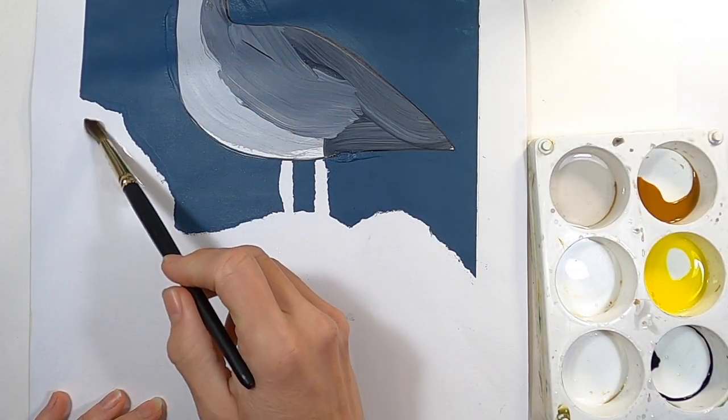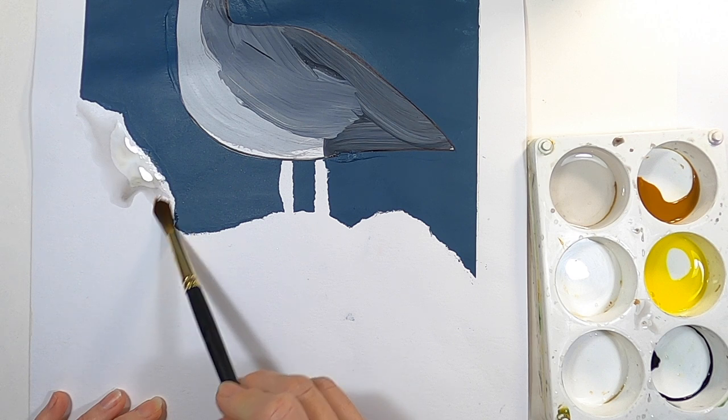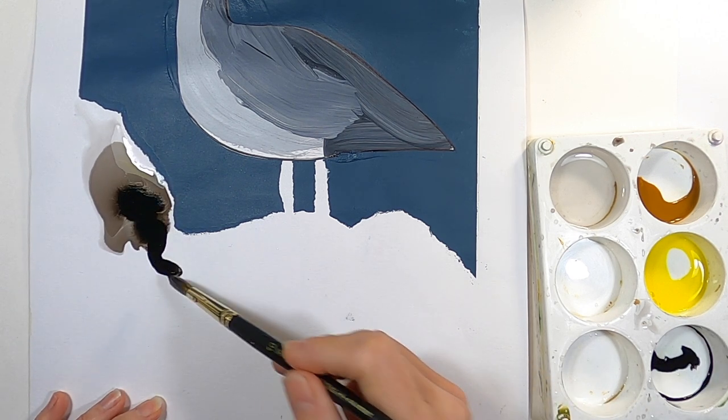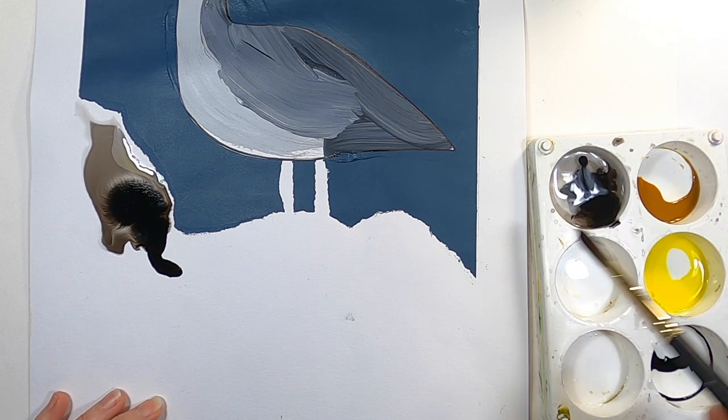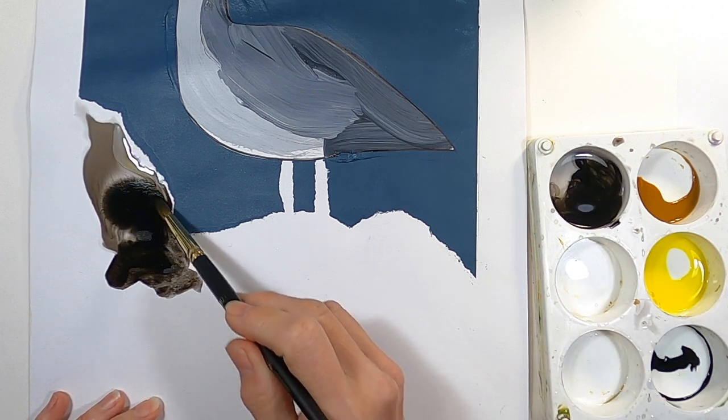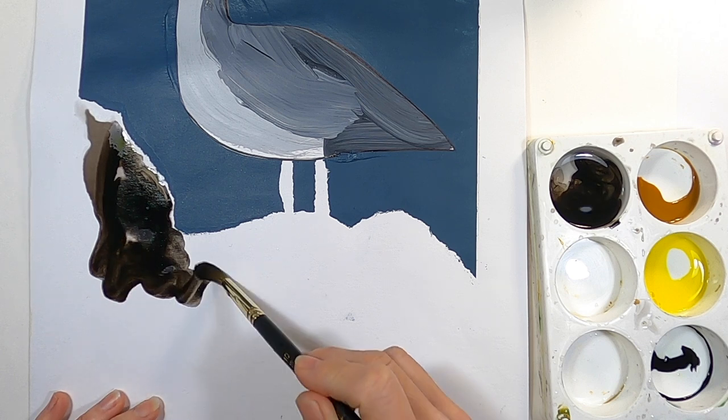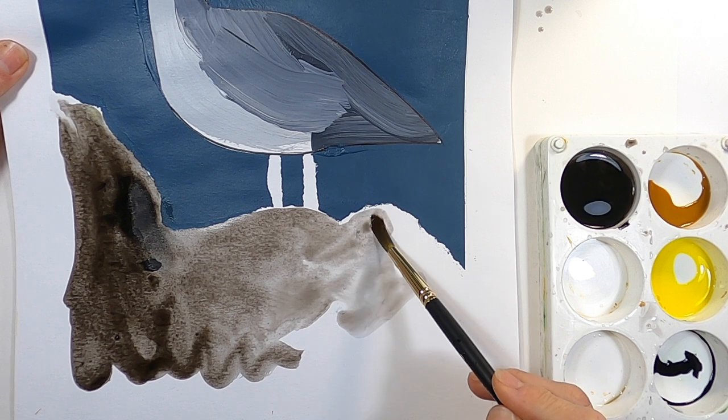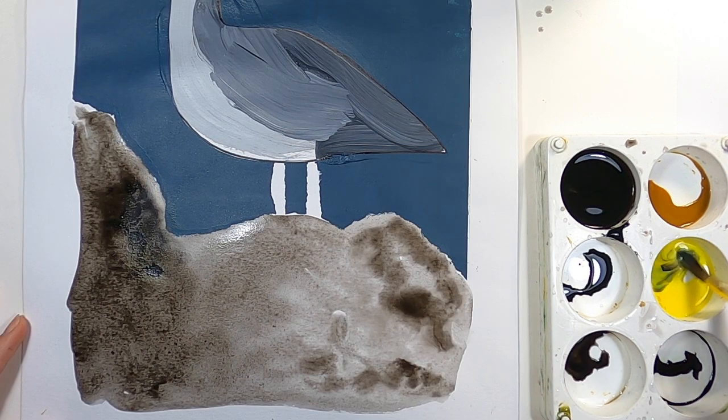Once the painted sky has dried, you can fill in the rocks. I'm using some black, yellow and brown coloured inks and a watery wash, but there's a number of art materials you could use here. Watercolours or watercolour pencils could work, even watercolour crayons. It's really up to you, but see if you can find a medium that contrasts with the flat even blue of that painted sky.